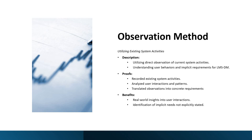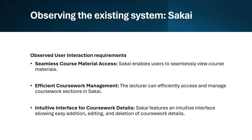The benefit of this method is that it gives you real-world insight into user interactions, as well as identification of implicit needs — not explicitly stated. Here is Sakai, which is one of the existing systems we observed. We observed user interaction techniques and inferred requirements. For example, Sakai provides seamless course materials access, enabling users to seamlessly view course materials.